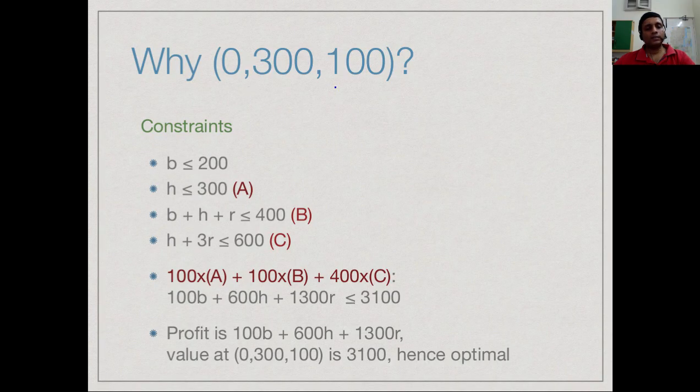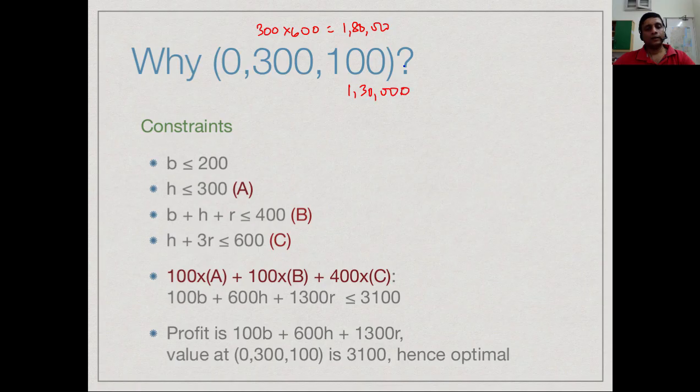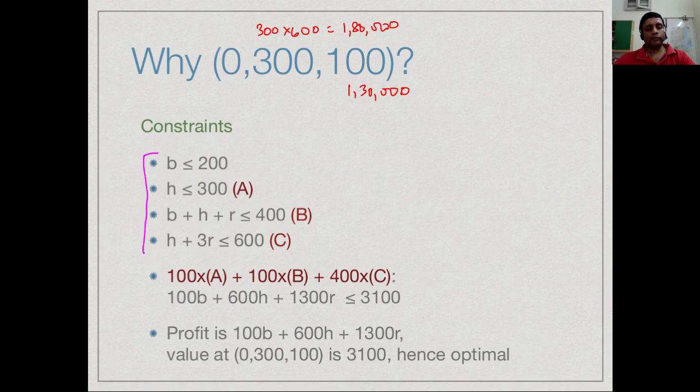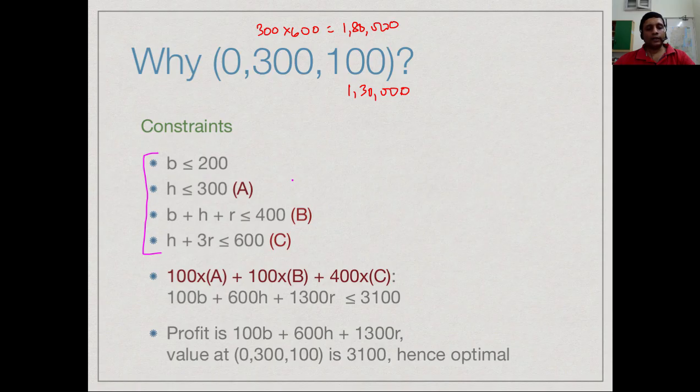We might ask, is this really the case? Is this really our best thing? Remember that if I do this, I get 300 into 600, so I get 1,80,000 from here and you get 1,30,000 from here and that is how we get 3,10,000. How do I know that this answer is actually the best? Here is an interesting observation that we can make. These are some of the constraints that we had before. We have just removed the one which says that the three values b, h and r are greater than 0 because that is not useful.